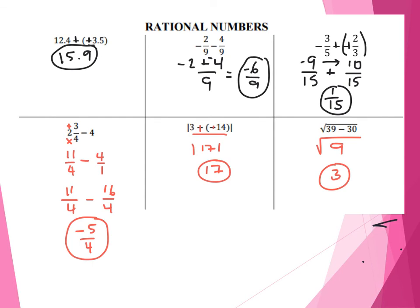Let's see what you got. We started with the mixed fraction. What I did right away was use the multiply-and-add method to get 11 fourths minus 4. I put 4 over 1 because a whole number as a rational number is over 1. Then I notice I don't have a common denominator — the common denominator of 1 and 4 is 4. So 11 over 4 didn't change. But for the second number, I multiplied the 1 by 4, so 4 times 4 is 16. Notice if you take 16 divided by 4 you get 4 — same number, just written differently. Subtracting 11 minus 16, keeping the denominator of 4, gives negative 5, so you get negative 5 fourths.